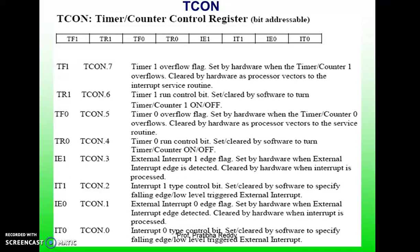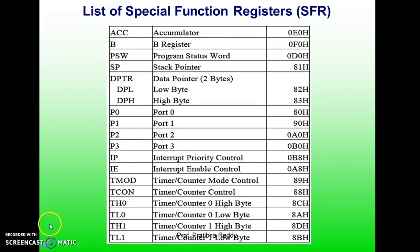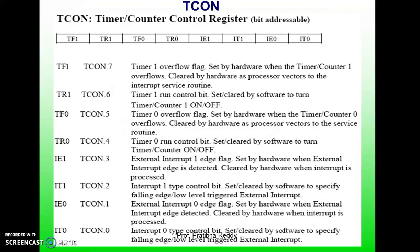Timer 0 registers: the 16-bit register of timer 0 is accessed as a low byte and high byte — TH0 and TL0, meaning the higher byte of timer 0 and the lower byte of timer 0. Similarly, timer 1 registers are both 16-bit, accessed as TH1 and TL1.